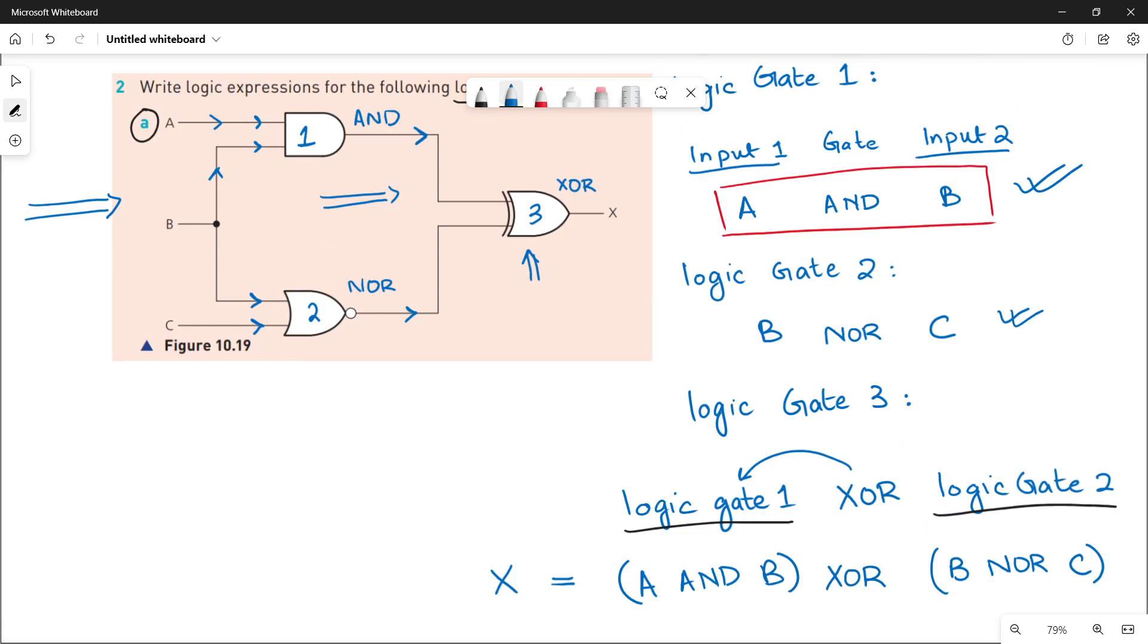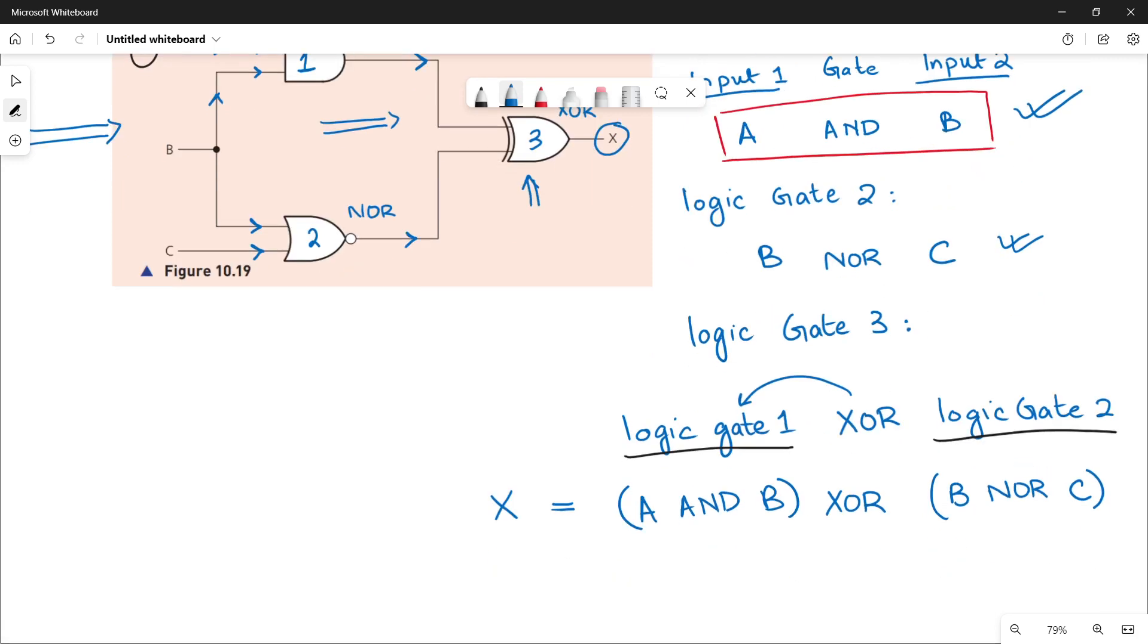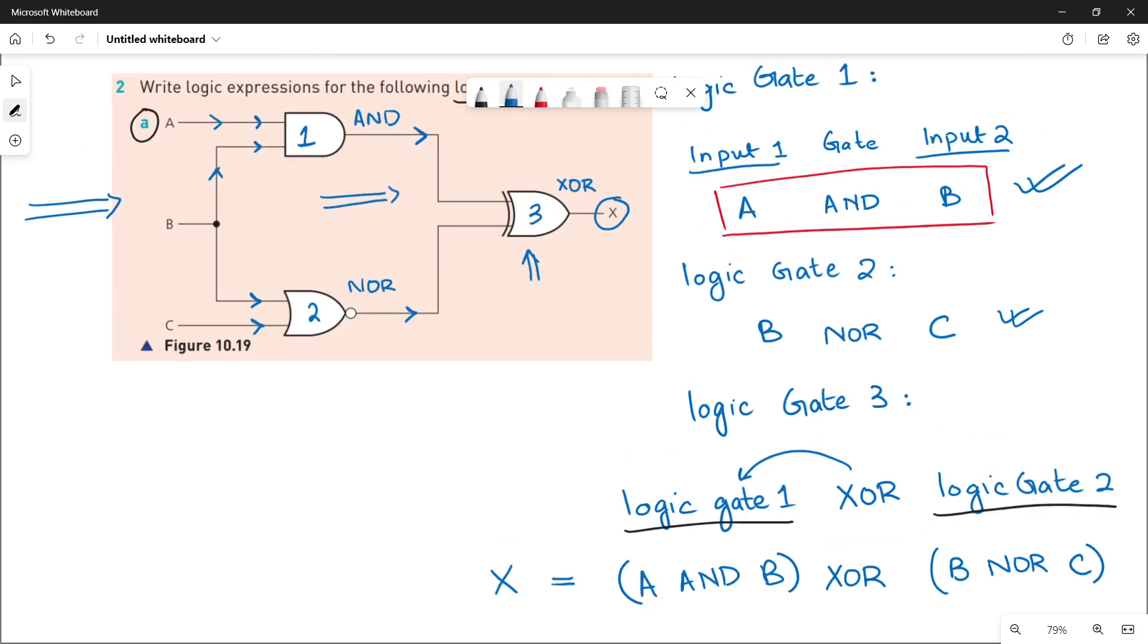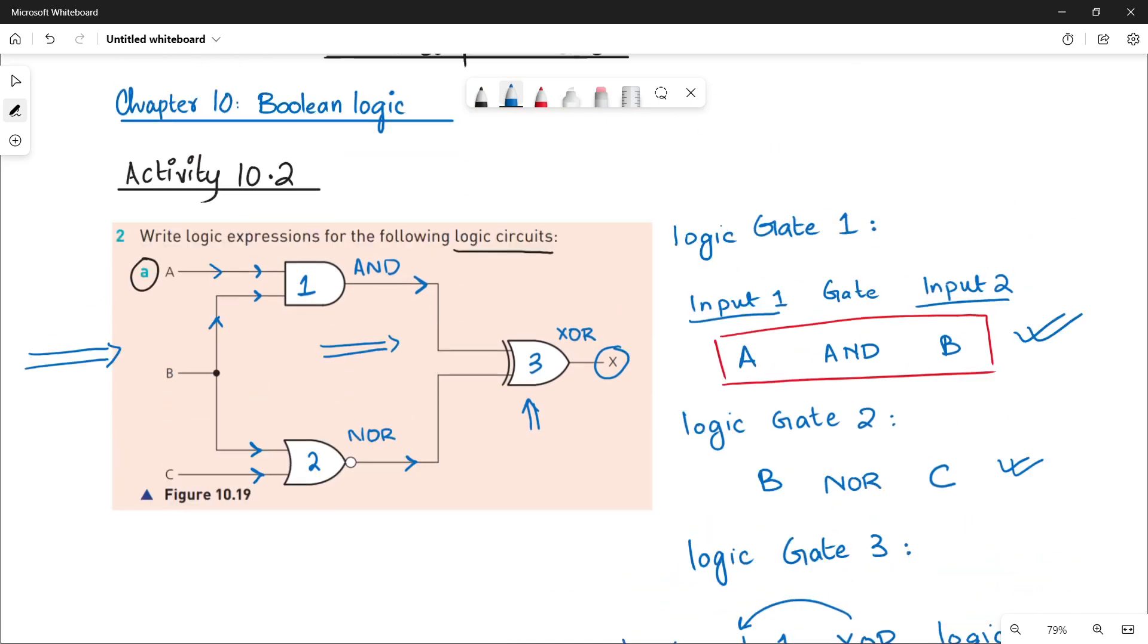So this is going to be your final output, or we name it as X. Because look at here in your picture, the final output is X. So X equals to A AND B XOR B NOR C. I hope that you understand the whole working. Please see the next video in which I will be doing part B of the same exercise so that your understanding will become more strong.